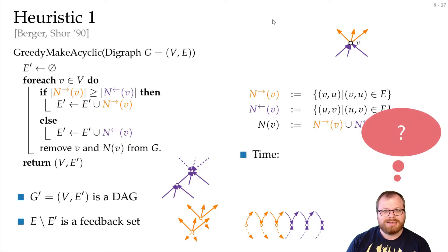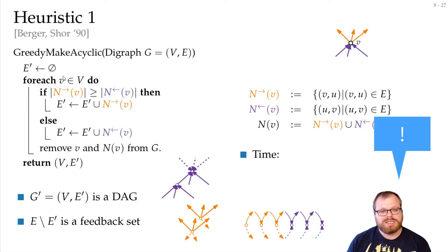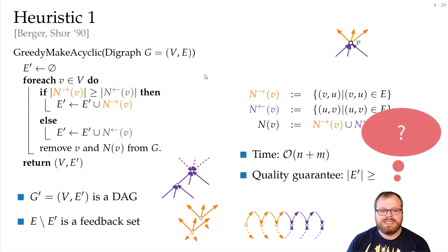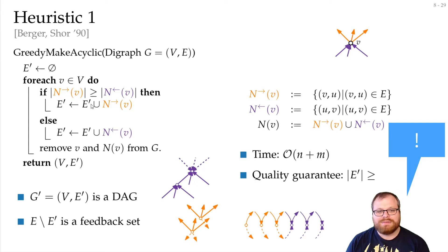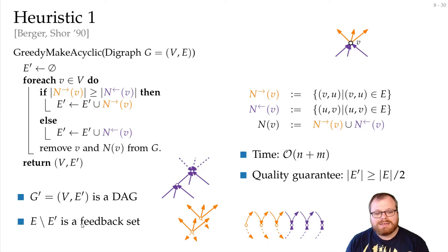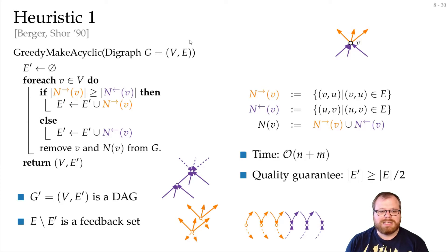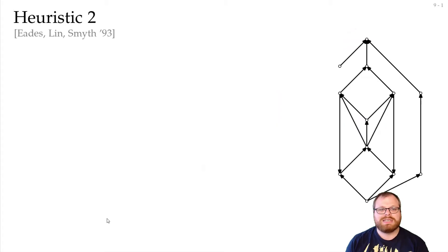How much time does this algorithm take? We look at every vertex and for every vertex we look at all its neighbors, so it takes O(n + m) time. Regarding quality: since in every step we take at least half of the remaining edges, we pick at least half of the total edges. So we can find a feedback set containing at least half of the edges in linear time — linear in the number of edges. That's already a useful guarantee. But we can do better with a slightly more involved heuristic by Eades, Lennon, and Smith from 1993.